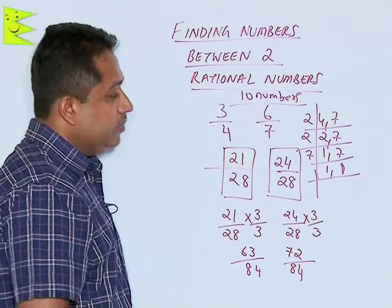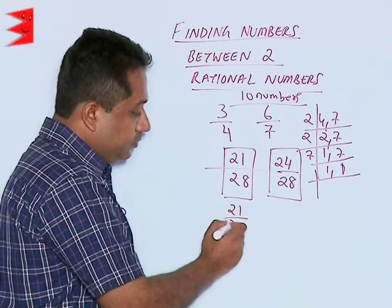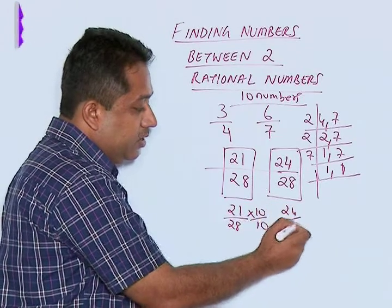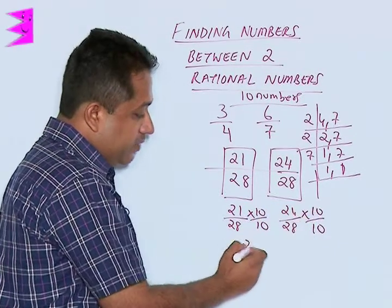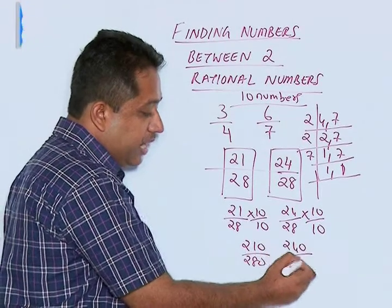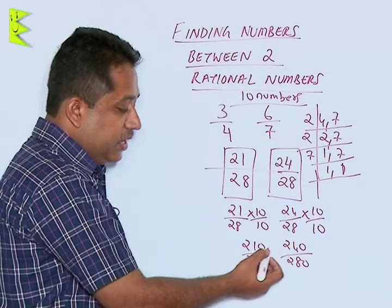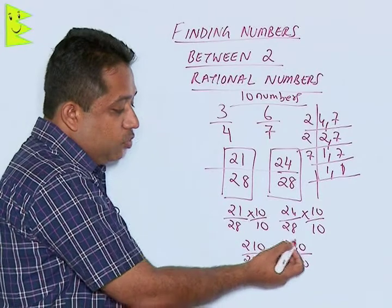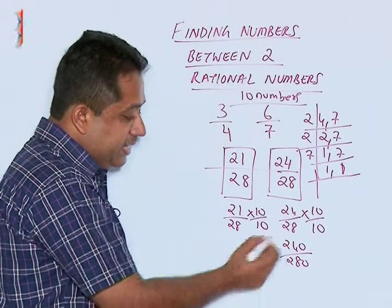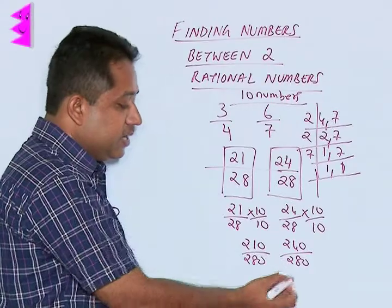Let us take a higher value. Let us multiply and divide 21 by 28 by 10, and 24 by 28 by 10. We get 210 by 280 and 240 by 280. Now we find that comfortably we can find 29 numbers between them: 211 up to 239. So any 10 numbers between 210 by 280 and 240 by 280 can be selected and written as the answer.